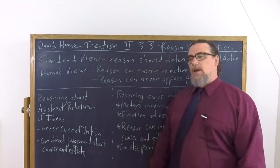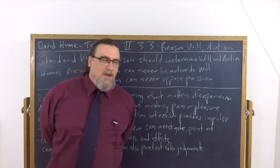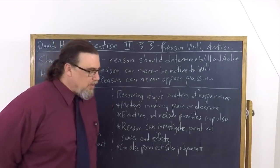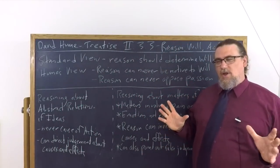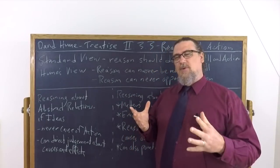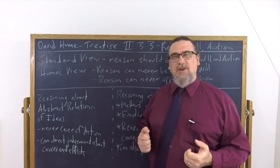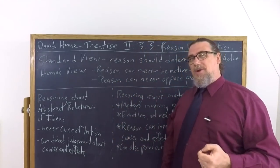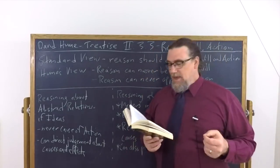And he says, if any other motive or principle challenged the direction of his conduct, he ought to oppose it till it be entirely subdued or at least brought to conformity with that superior principle. So if I desire something that I know is irrational, like say a fifth helping at a meal that's been going on for two hours or to drink myself into a stupor or any one of many other things that is really from some respect irrational, I should follow what reason says, and I should use my force of will that reason has informed to impose itself upon that unruly passion and say no to it.